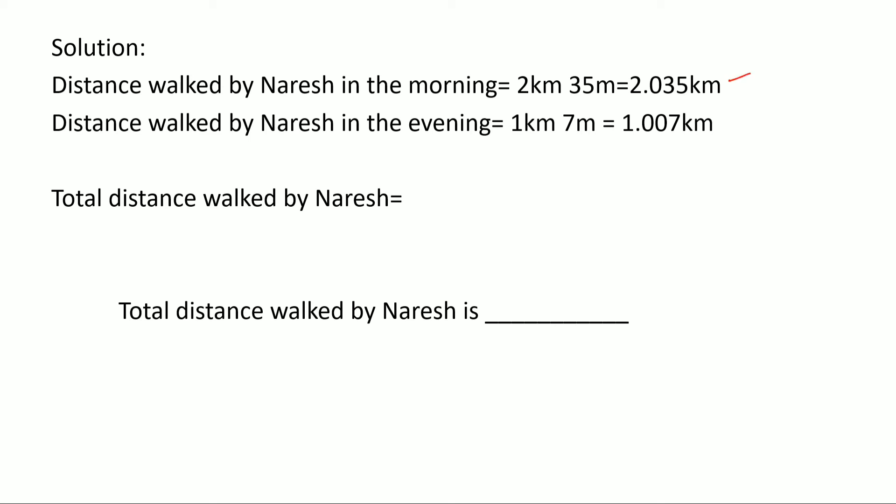And then distance walked by Naresh in the evening is 1 kilometer 7 meter: 1.007 kilometer. This we have just seen. So total distance walked by Naresh would be just added up: 2.035 kilometer plus 1.007 kilometer.